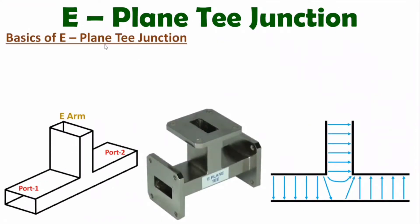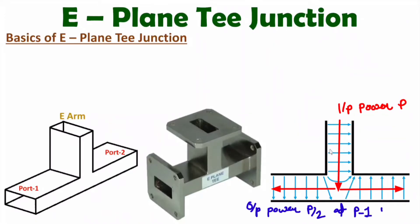If you observe the structure of E-Plane T-Junction, it has in total three ports. This is E-Arm, that is port number three, and here we have port one and port two. In the laboratory, you might have seen this E-Plane T-Junction. If you observe the cross section, here we have E-Arm, this is port one and this is port two. If you give input at E-Arm, the electric field orientation is as shown. At port one and port two, we have a 180 degree out of phase signal.